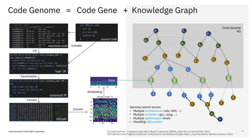We've built the system out and we're able to support different architectures — x86 and ARM — multiple compilers like GCC and Clang, and multiple levels of optimization. When source code is compiled for different environments, we account for that because the semantic representation of software from one machine to another — even in different environments — will have the same semantic characteristic, which we can pinpoint.